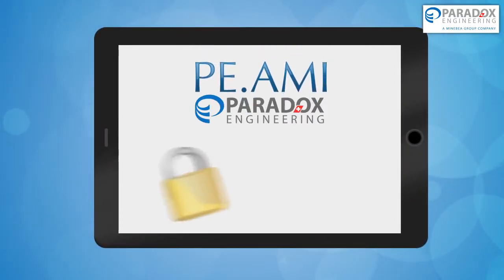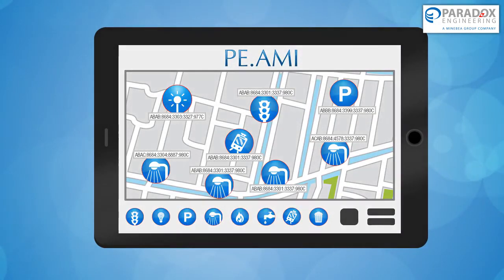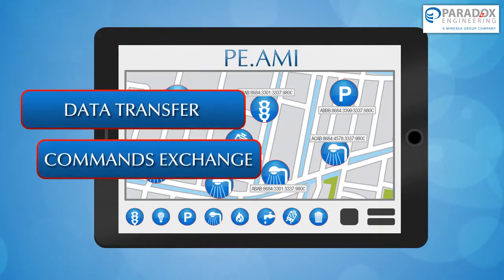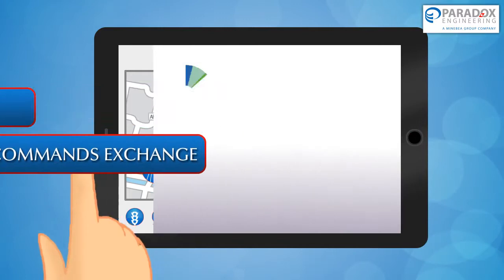PE-AMI by Paradox Engineering is the open standard-based platform that makes all this possible, building a smart urban network where each object is assigned a unique IP address to allow data transfer and commands exchange.